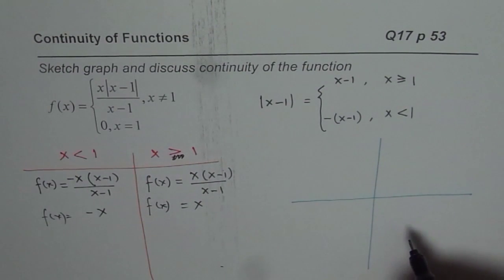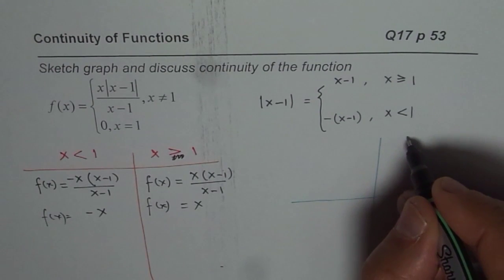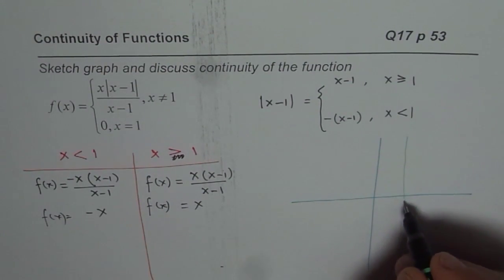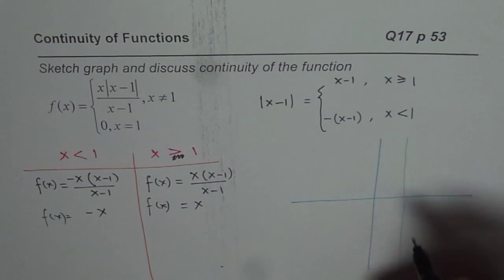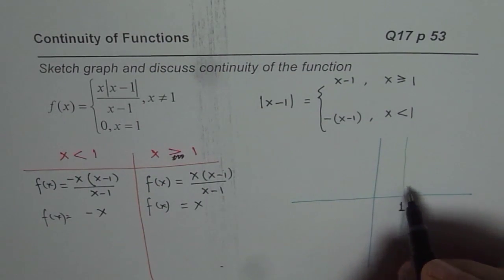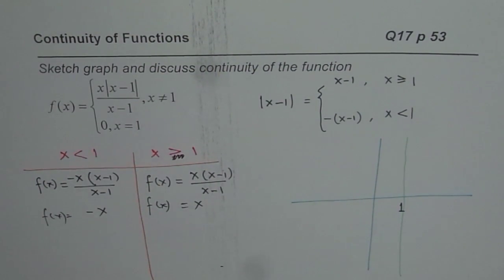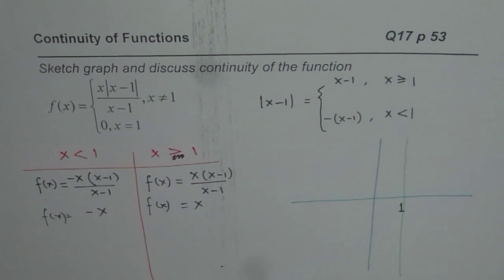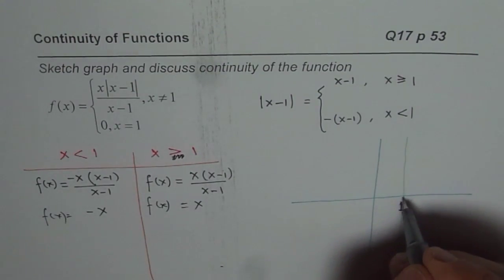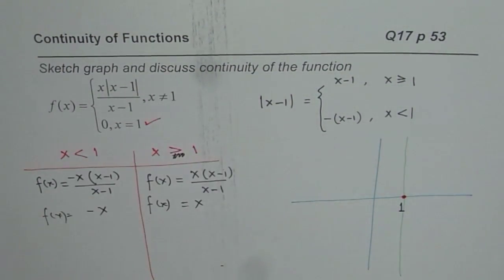So the first part is when x is less than 1. So let us say this is 1 for us. So if that is 1 for us, we know at 1, the value is 0. So let us just put at 1, the value is 0. So this is the value at 1. So this is this part. Done.